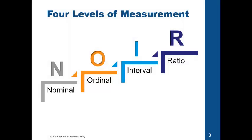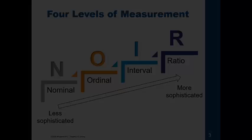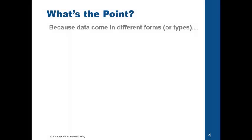Four levels of measurement. Here are the four levels. Starting with the least sophisticated: nominal, goes up to ordinal, interval, and ratio, which is the most sophisticated. You might be asking, what's the point of this? Why do we have to learn this?